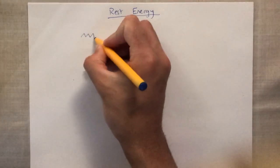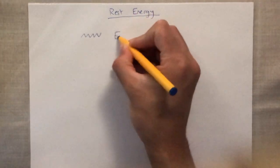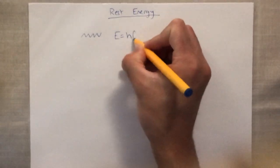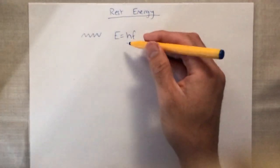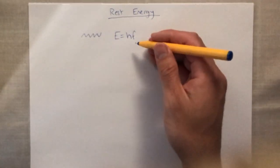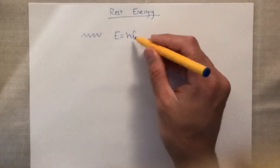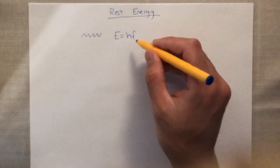So for a wave, to calculate the energy of it, we normally use E equals HF, where H is the Planck's constant, which is 6.63 times by 10 to the minus 34 joules seconds, and F is the frequency measured in Hertz.